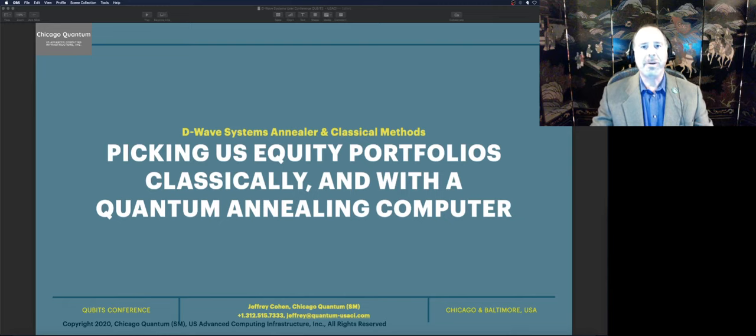Hi, this is Jeffrey Cohen, President and Founder of U.S. Advanced Computing Infrastructures. We're here to talk today about our use of quantum and classical algorithms, specifically on the D-Wave quantum annealer, to pick efficient stock portfolios for investors. We're going to talk about our approach, what we intended to accomplish, what we have accomplished, and our next steps, and give you a sense of the business value as well.